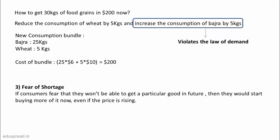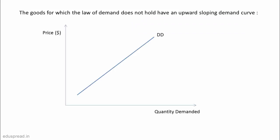So, this is all about the exceptions to the Law of Demand. It is important to note that the goods for which the Law of Demand does not hold have an upward sloping demand curve. As you can see here, in case of an upward sloping demand curve, the price and quantity demanded are positively related — so higher the price, higher the quantity demanded. For the rest of the course, I will assume that the Law of Demand does hold and the demand curve is downward sloping.